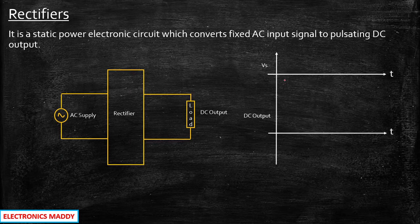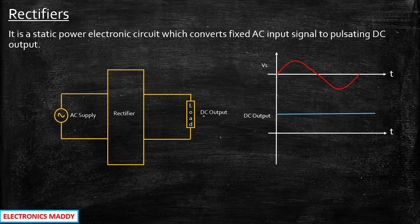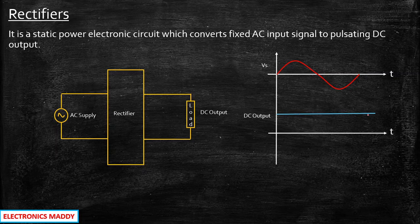If you have an input signal which is sinusoidal in nature, you need to get the output across the load to be pure DC. But in most cases we will not be getting pure DC, and certain arrangements need to be made to achieve a pure DC signal. So fundamentally, rectifiers are circuits used to convert AC to DC.